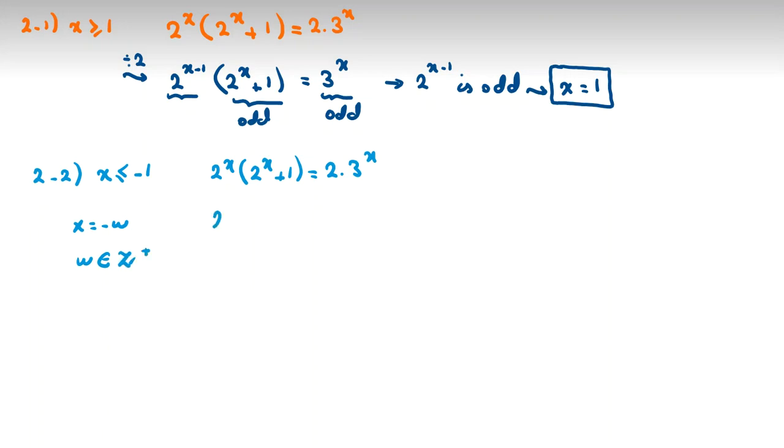Now if we replace, it will be 2 to the negative w times 2 to the negative w plus 1 equal to 2 times 3 to the negative w. w is positive. So I can write 1 over 2w times 1 over 2w plus 1 equal to 2 over 3w.